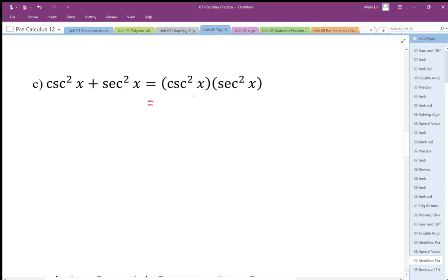So I'm going to write this as 1 over sine squared x times cos squared x, well there's no identity there. Here I'm going to write this as 1 over sine squared x plus 1 over cos squared x.